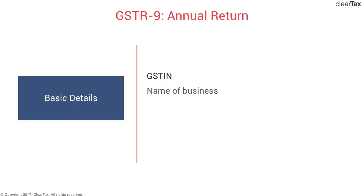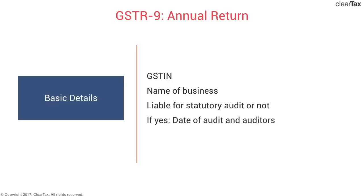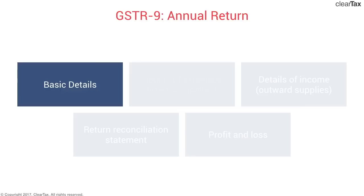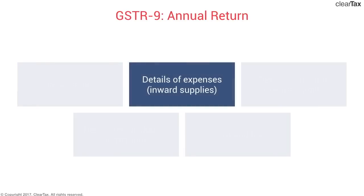The first category is basic details — GSTIN and name of business. A very specific piece of information required is whether the taxpayer is liable for statutory audit or not. If yes, then the date of audit as well as the name of the auditors have to be mentioned. That's all for basic details.